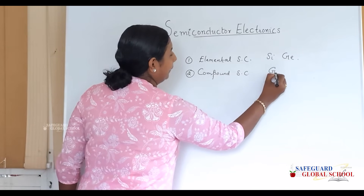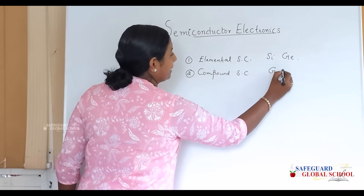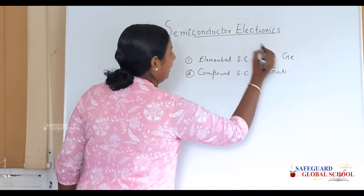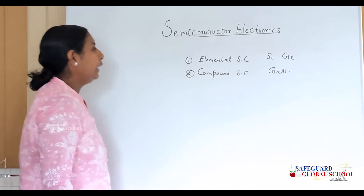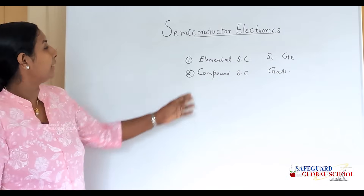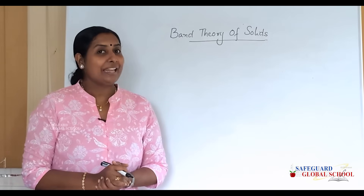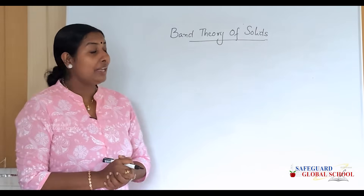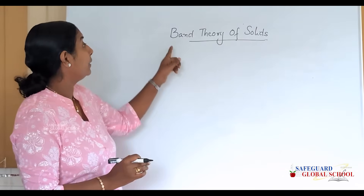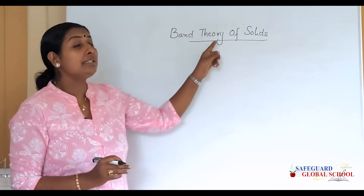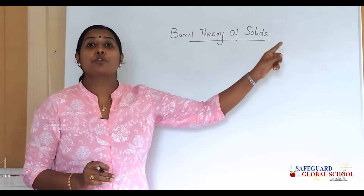The second type is compound semiconductors. For example, gallium arsenide is an example of a compound semiconductor. Next, we will deal with the band theory of solids.